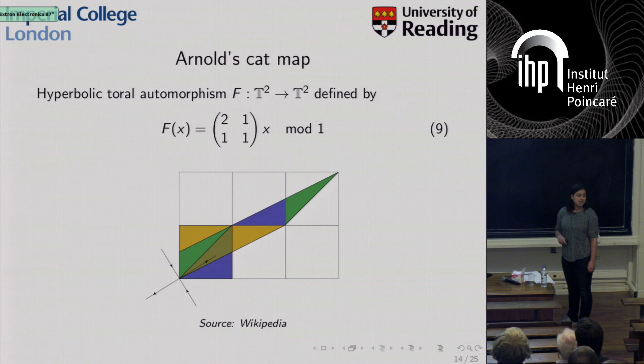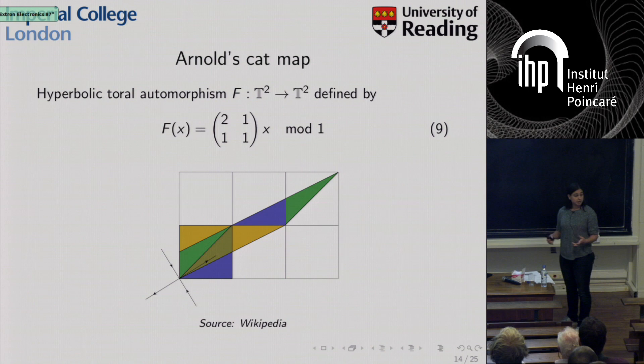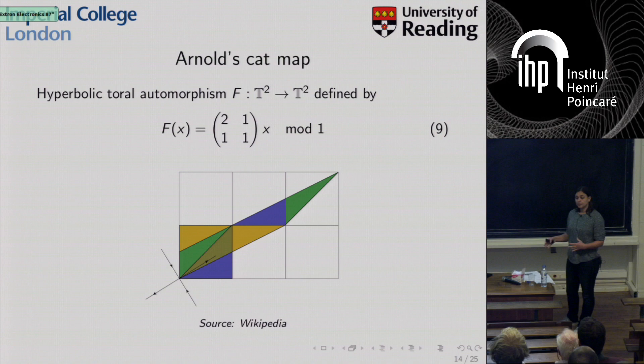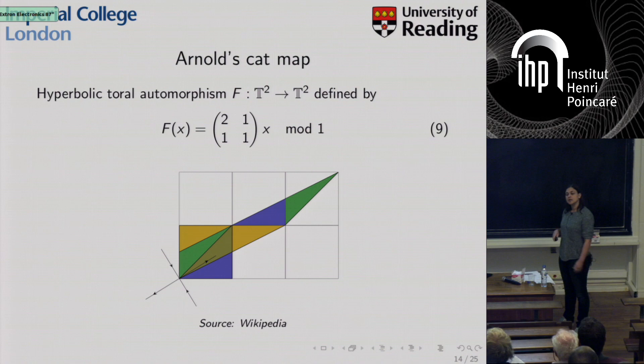A classic example of an Anosov diffeomorphism is Arnold's cat map — a hyperbolic toral automorphism from the torus to itself. The torus can be thought of as the surface of a donut. It is given by a matrix with determinant one, so it is invertible and volume preserving, meaning the invariant measure is the Lebesgue measure. The contracting and expanding directions at every point are given by the eigenvalues and eigenvectors — the eigenvalue greater than one gives expansion, and the one less than one gives contraction.